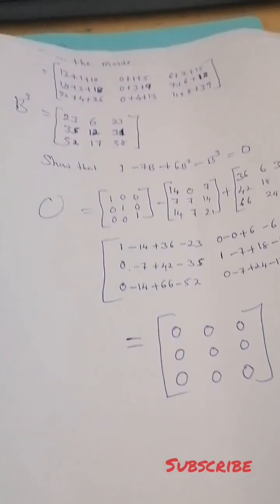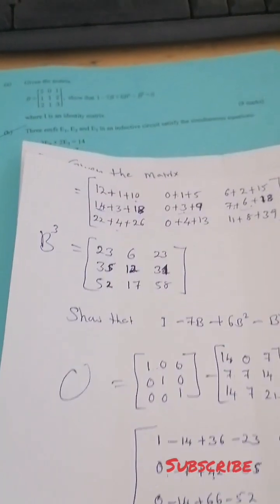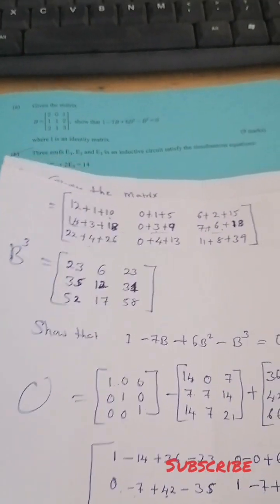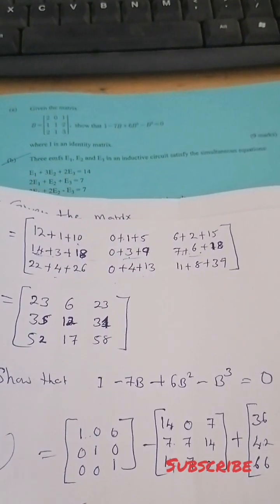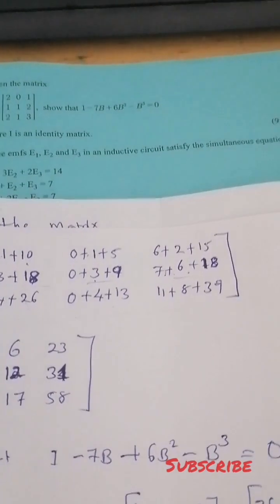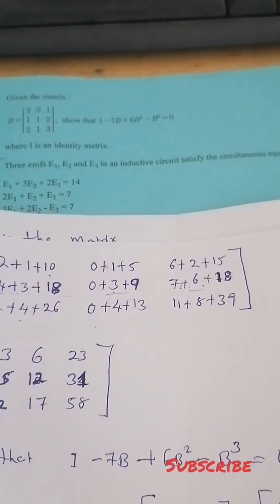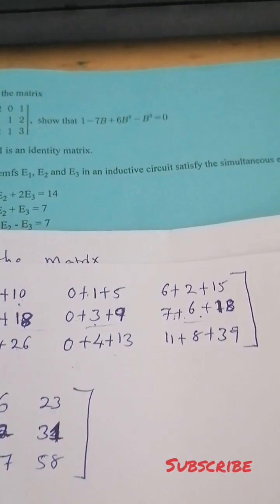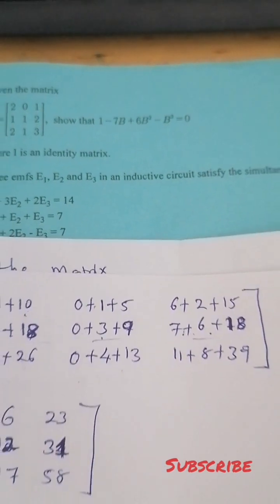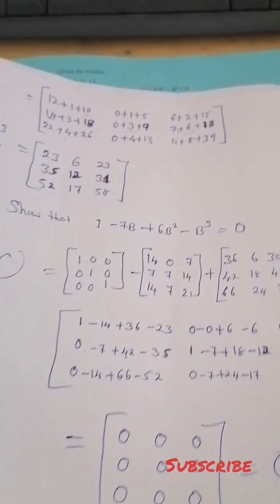Let's go back to the equation. It is asking that we show that the identity matrix minus 7B plus 6B squared minus B cubed equals zero.